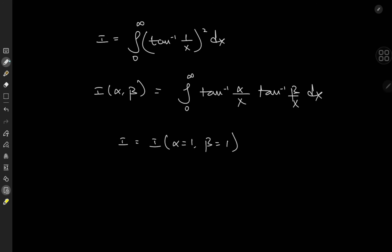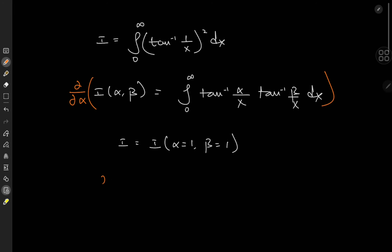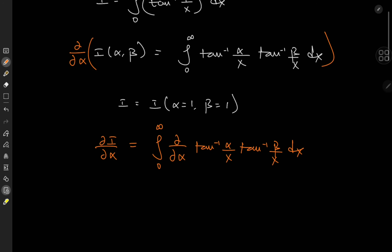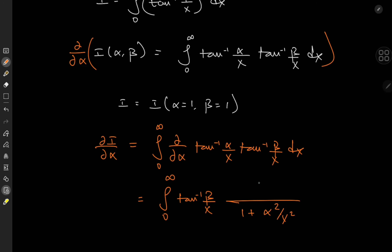We'll proceed with Feynman's trick of differentiating under the integral sign. So we'll first differentiate this whole thing partially with respect to alpha. We have partial I over partial alpha equal to the integral from zero to infinity of the partial derivative of the integrand. Because we're differentiating partially with respect to alpha, the arctangent beta over x term is treated as a constant. For the arctangent, we have something over 1 plus alpha squared over x squared, and that something up top is the derivative of alpha over x, which is 1 over x.